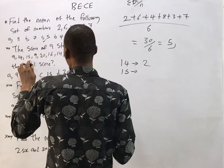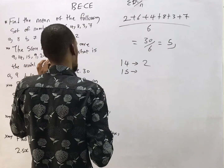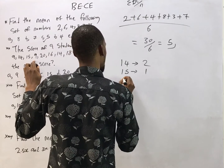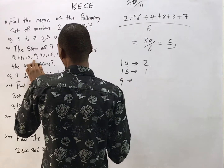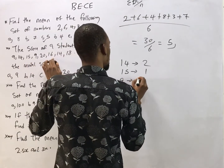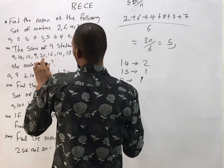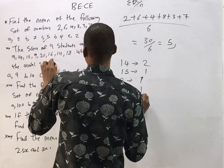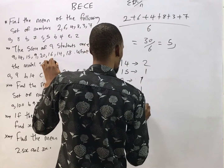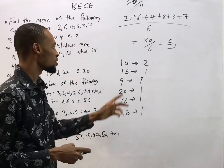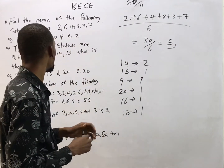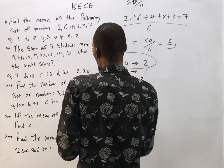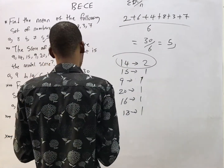Now let's see: 15 appeared just once, 9 appeared just once, 20 appeared just once, 16 appeared just once, and 18 appeared just once. So the number that appeared the most is 14. The mode is the number with the highest frequency, so 14 is the modal score.